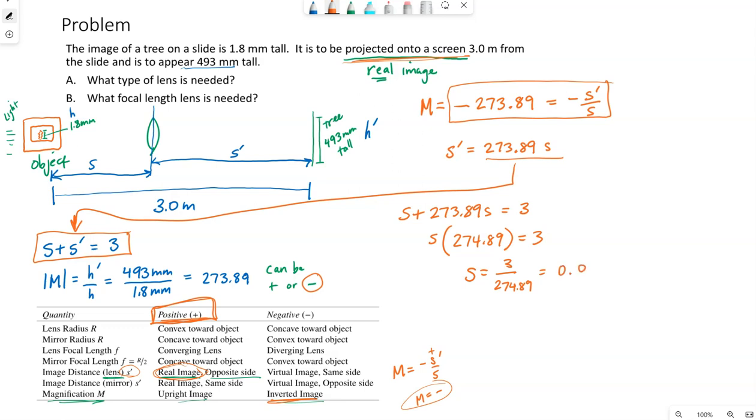I'm getting 0.01091. That's four sig figs at the moment. I'll round it to two at the end. This is in meters because this three was in meters.